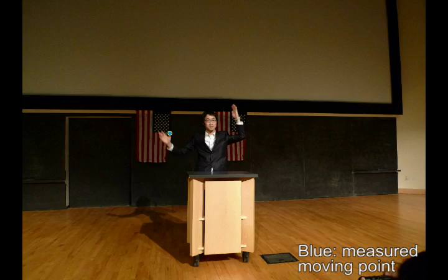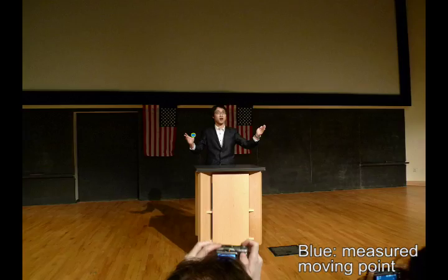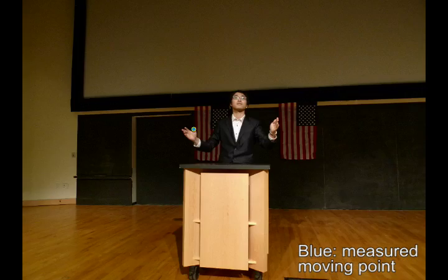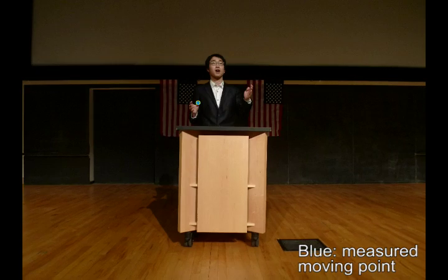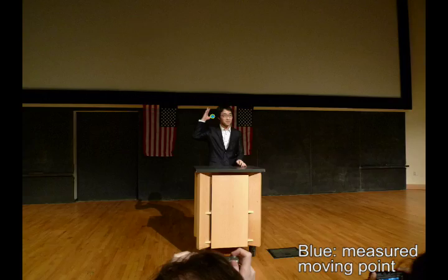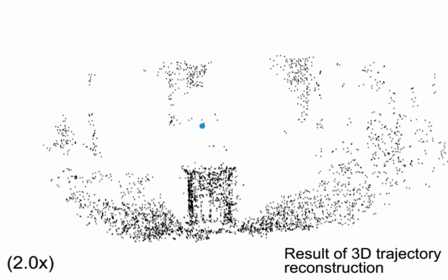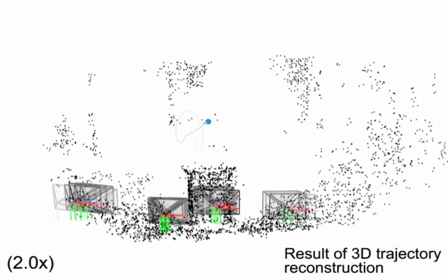Input measurements: the blue point specifies the 2D location of the moving point. Using linear trajectory basis, our method can estimate the 3D trajectory in a closed form. The accuracy of 3D trajectory reconstruction is correlated to the camera center motion.